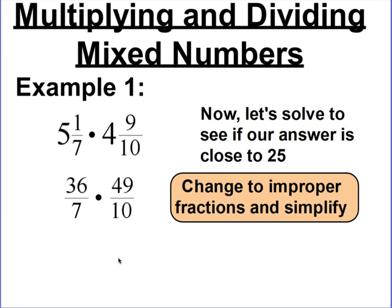Let's see if we can simplify first. Remember, we can simplify either going up and down — vertically — or diagonally. The only way you cannot simplify is sideways, or horizontally. One thing that sticks out is 49 and 7 — both of those numbers can be divided by 7. 49 divided by 7 equals 7, and 7 divided by 7 equals 1. Diagonally the other way, 36 and 10 are both even numbers, and every even number can be divided by 2. So 36 divided by 2 gives you 18, and 10 divided by 2 gives you 5.